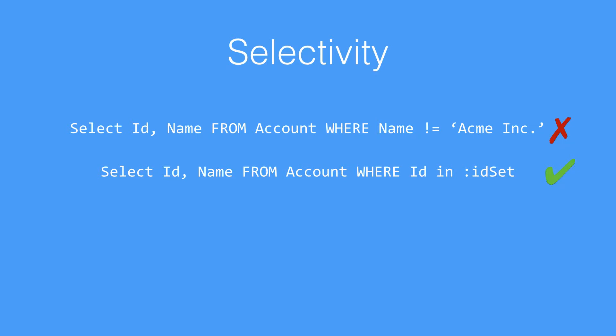Salesforce, in the Force.com Query Optimizer, goes through as part of its optimization process and will run a series of different calculations to work out which one of your filters is the most selective and use that as the basis of your query. If you have no selective filters — so none of the filters are working using a custom index or a standard index and none of them are going to meet the selectivity threshold — it won't run.